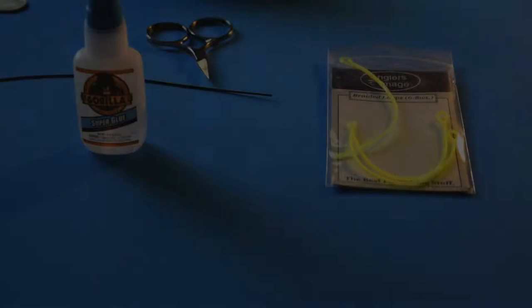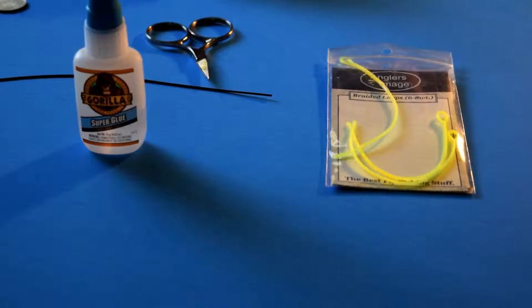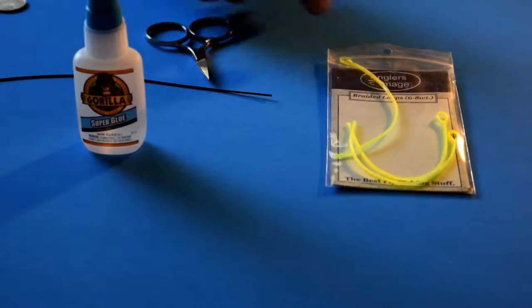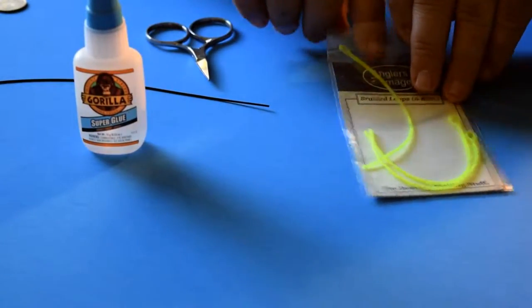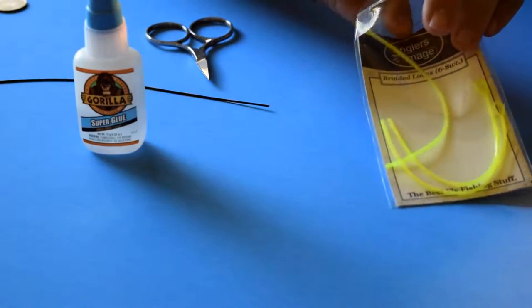Today I'm going to show you how I install the braided loops from Bass Pro Shops, the Angler Image. I think they're $6.70 or $7 at Bass Pro Shops. This is an 8 weight full sink line and each package comes with three.